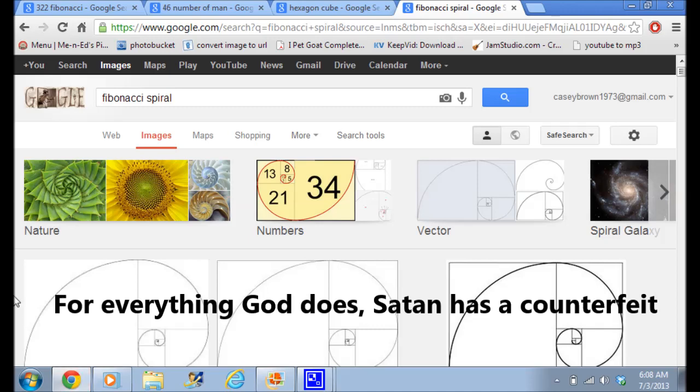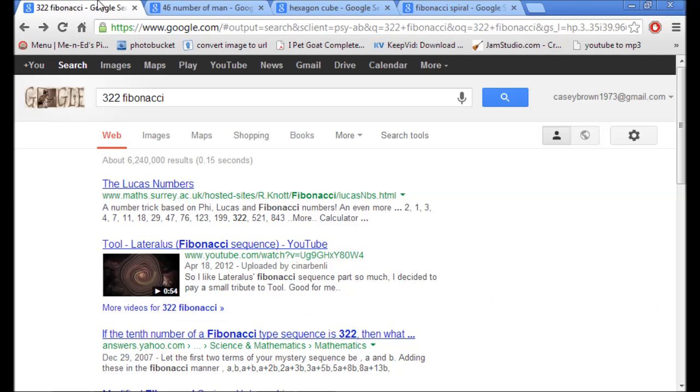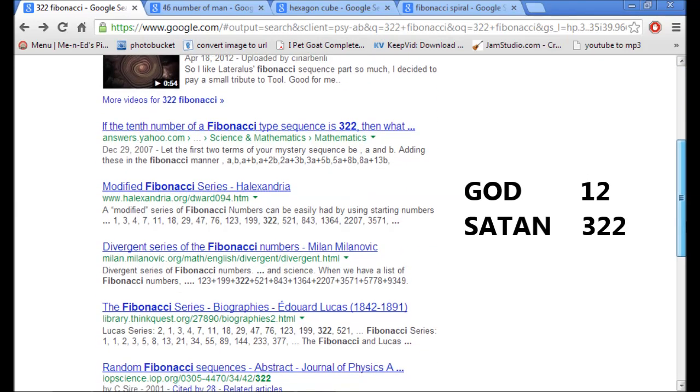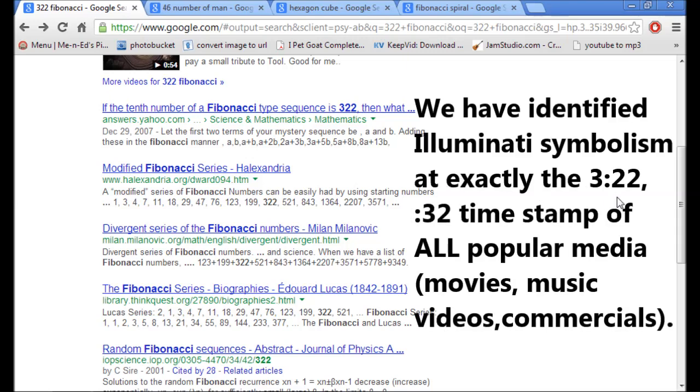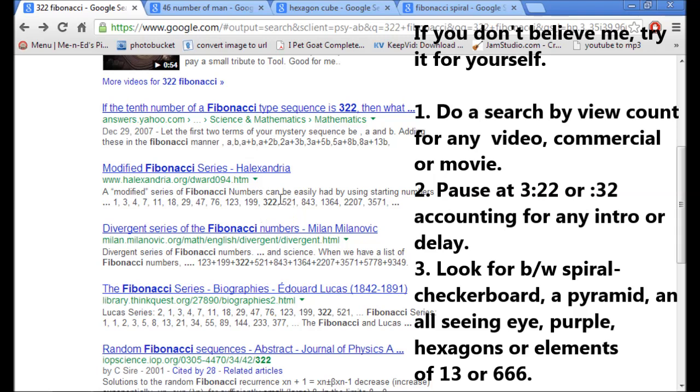So the number 322 kept coming up. 322 is the twelfth number in the Fibonacci sequence. You can count 12 spaces. What's happened is 12 is a complete number in the Bible - 12 disciples, 12 tribes of Israel - and the devil is taking the number 322 as his number of completion in mockery of our Creator.